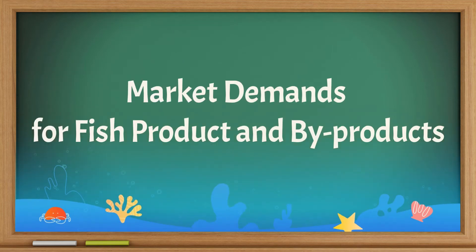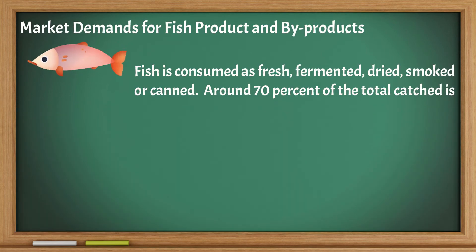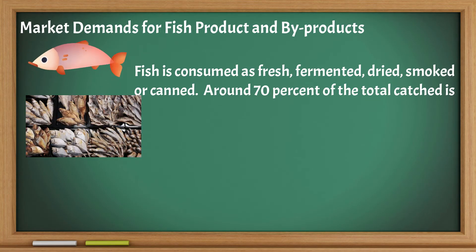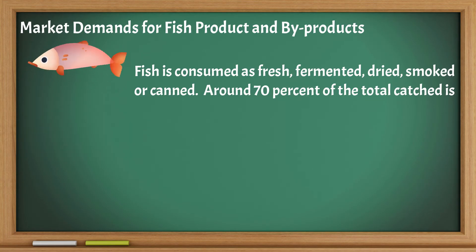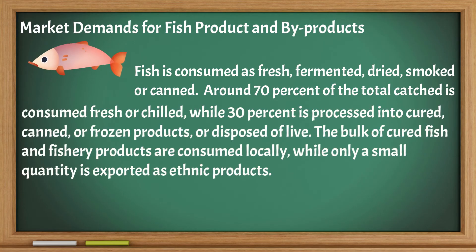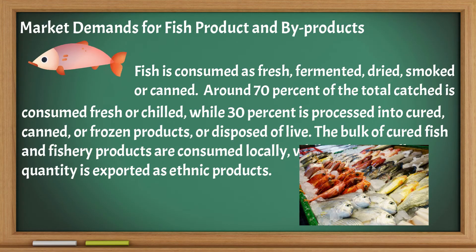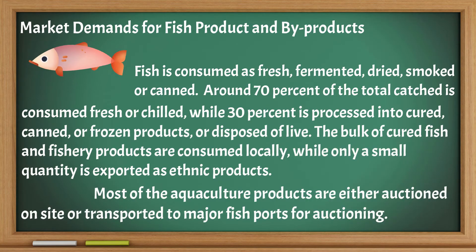Market demands for fish products and byproducts: Fish is consumed as fresh, fermented, dried, smoked, or canned. Around 70% of the total catch is consumed fresh or chilled, while 30% is processed into cured, canned, or frozen products or disposed of otherwise. The bulk of cured fish and fishery products are consumed locally, while only a small quantity is exported as ethnic products. Most aquaculture products are either auctioned on site or transported to fish ports for auctioning.